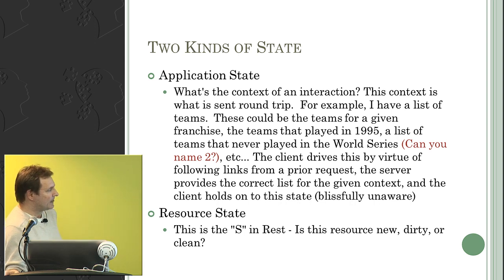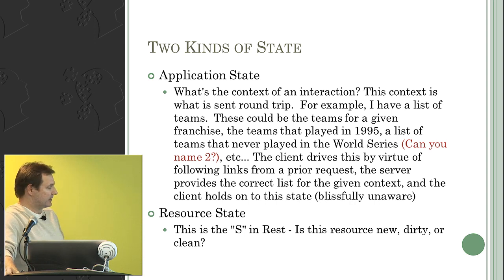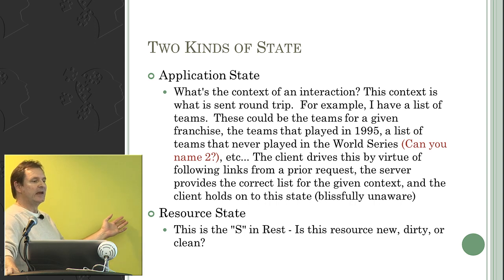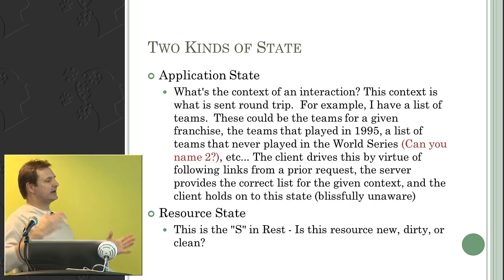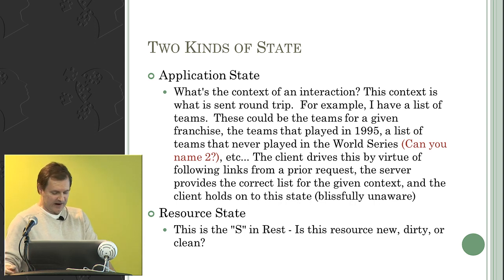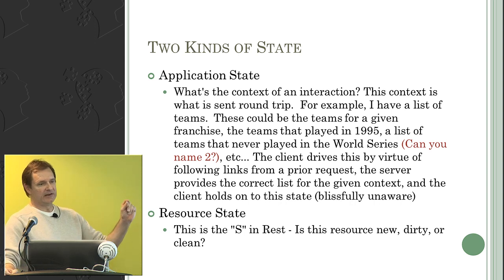Application state is basically the context in which you made your last call. A list of teams from a prior response could have been teams for the Boston Red Sox franchise or teams in the National League East—it doesn't really have any meaning on its own. But by virtue of getting that information in the form of a directed graph in my prior request, I have that information available. The key in REST is to actually derive some meaning from those relationships.